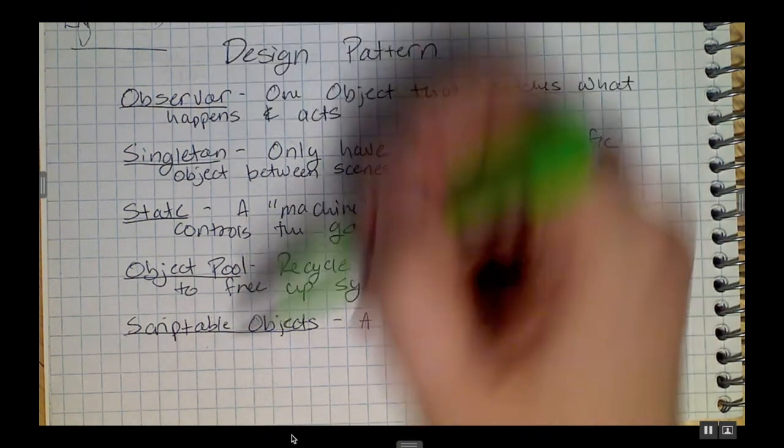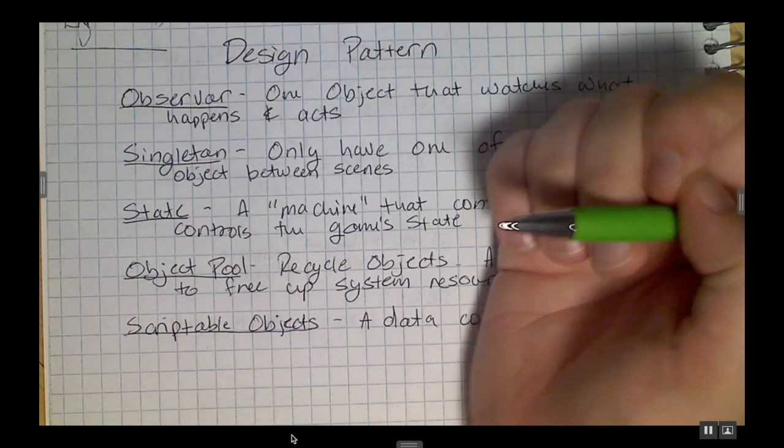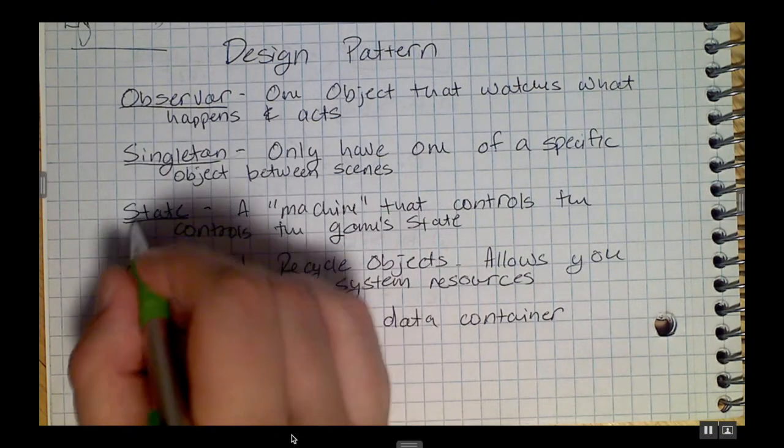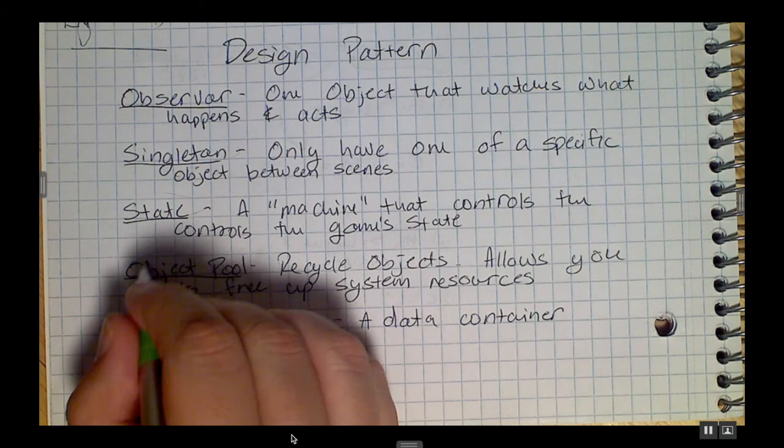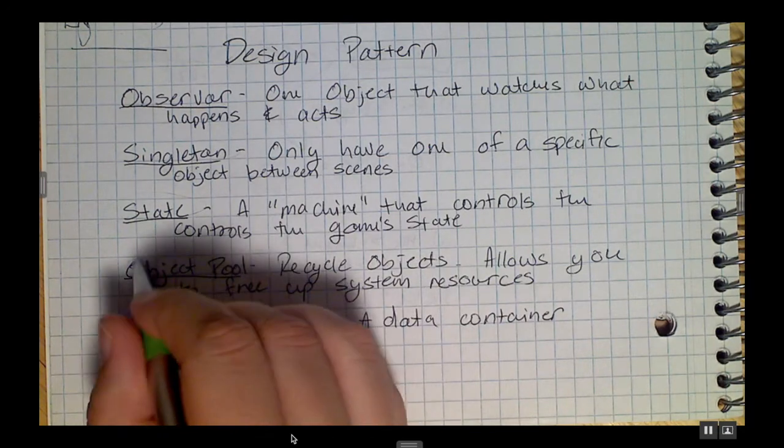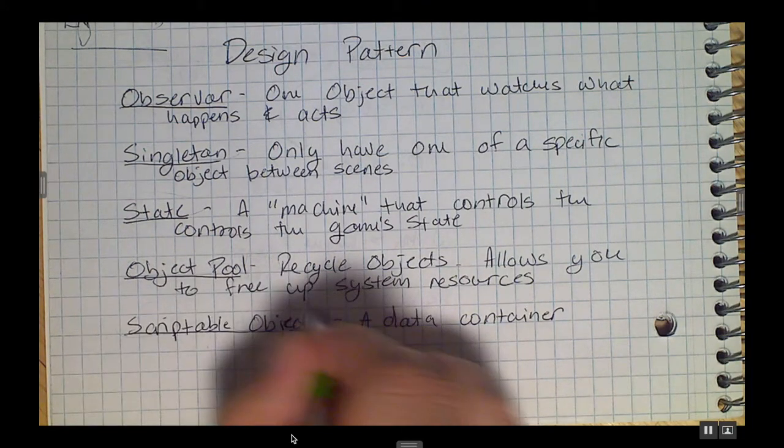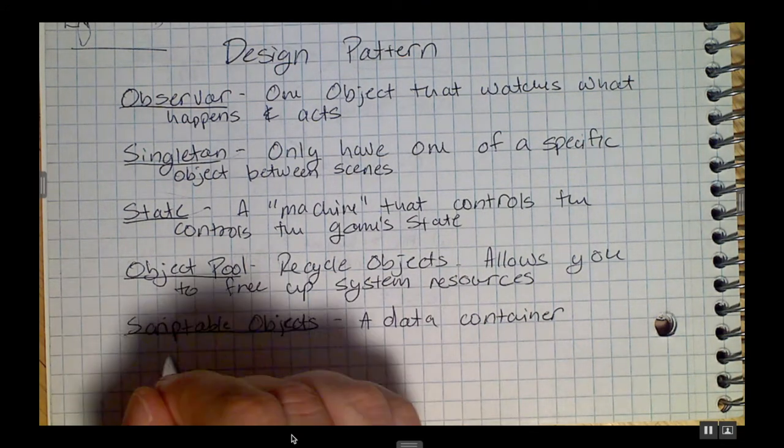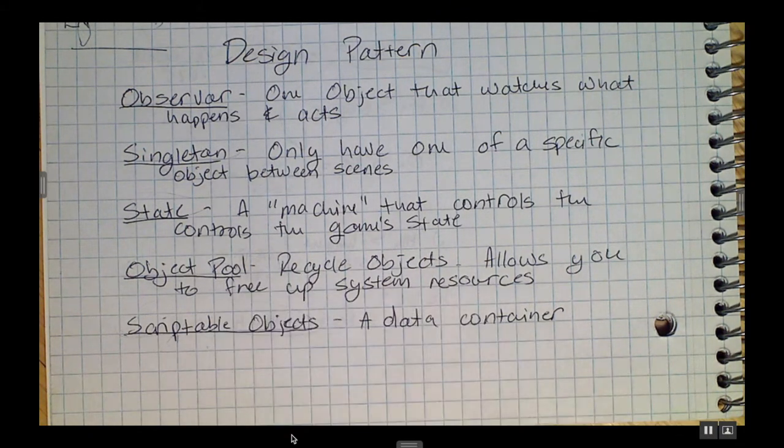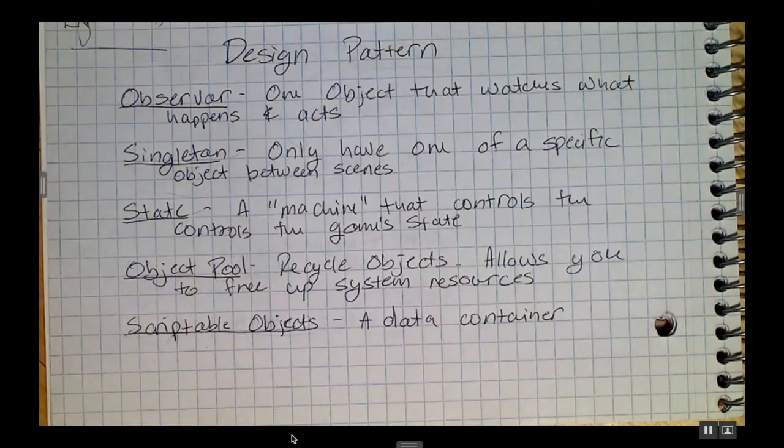So just kind of laying the groundwork here so that when we actually start building projects and I talk about using the observer pattern, hopefully people kind of know what I'm talking about. Or if we're using the singleton pattern, state machines - like I said, those show up a lot. Object pools if you're using a lot of the same object again and again, like if it's a shooter you have a lot of projectiles or enemies. And then the last one is scriptable objects, which I use honestly to store quite a bit of information. I built this AI system using scriptable objects that I think is kind of neat and we'll probably talk about later on.